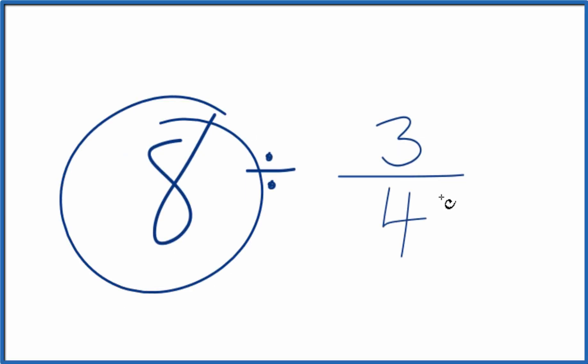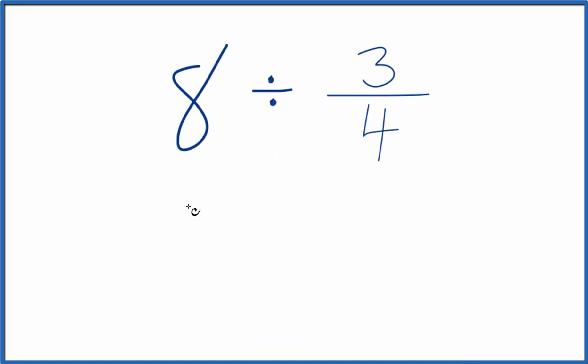If you need to divide 8 by 3 fourths, here's how you do it. So instead of 8, let's call this 8 over 1. It's still 8, we're just dividing by 1. But now we have a fraction.